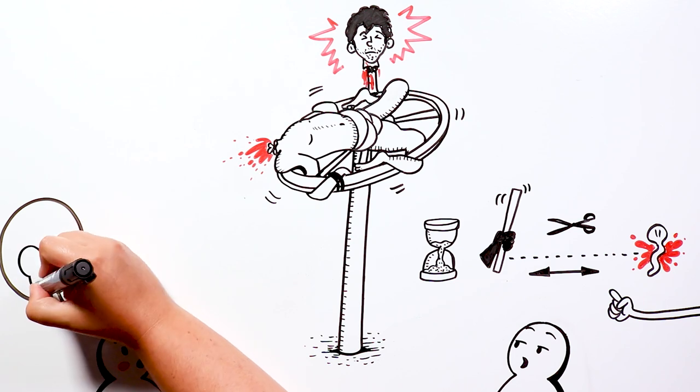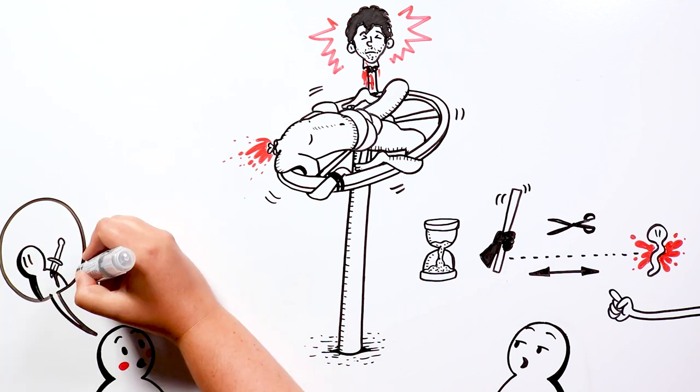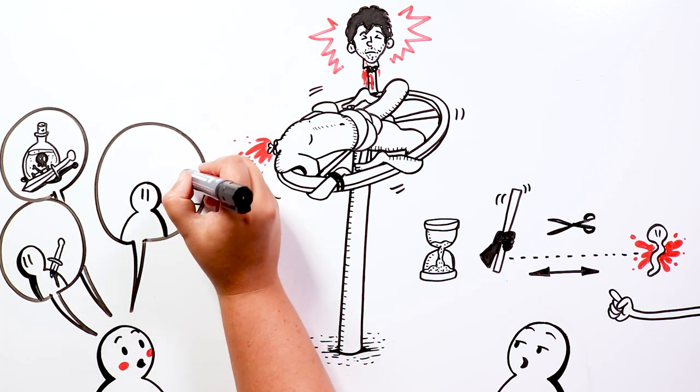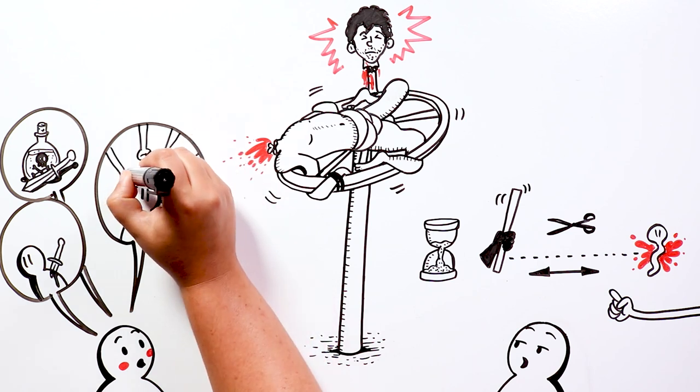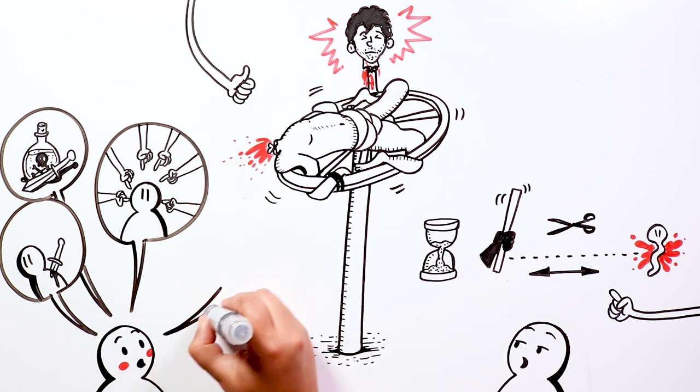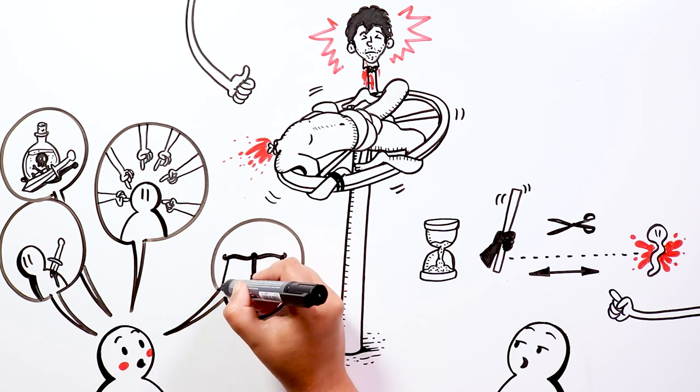This torture was used in cases of serious crimes such as treason or murder. At that time, when someone committed any of these crimes, they were automatically disowned by society. So this method of torture satisfied the desire for revenge of the people, who would sleep more peacefully knowing that this person would pay for their crimes.